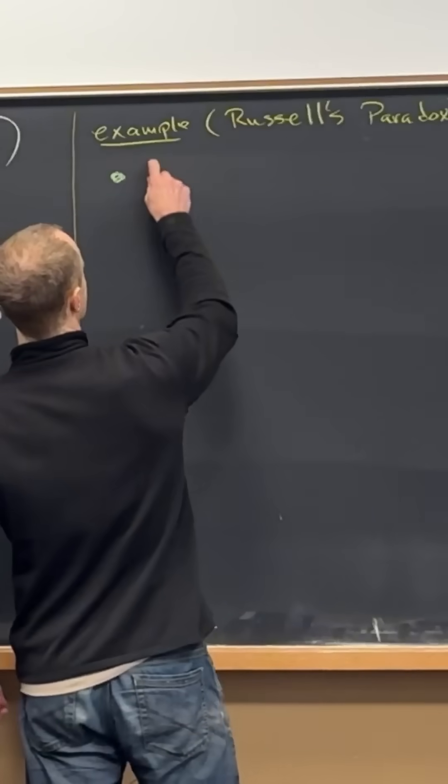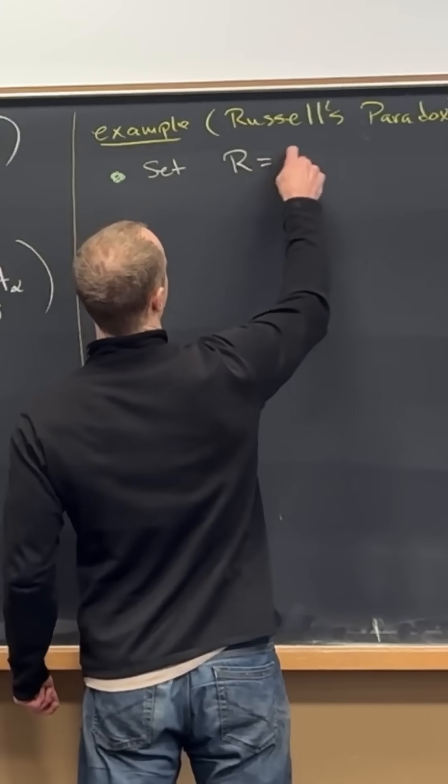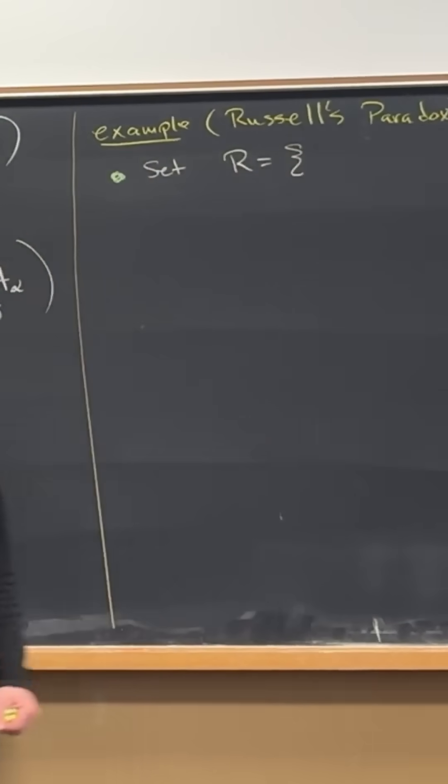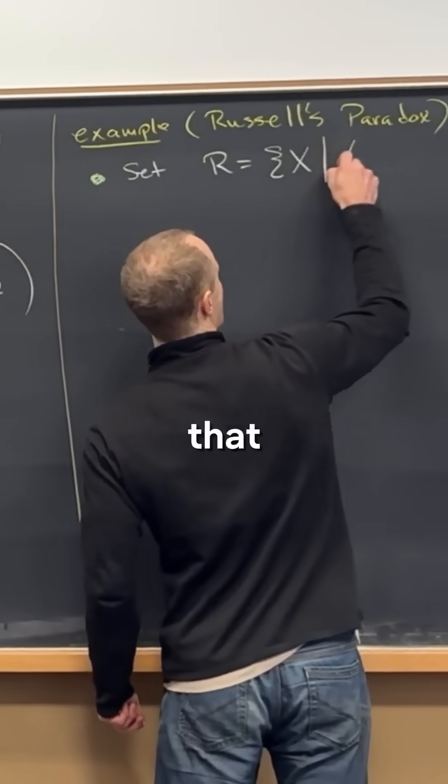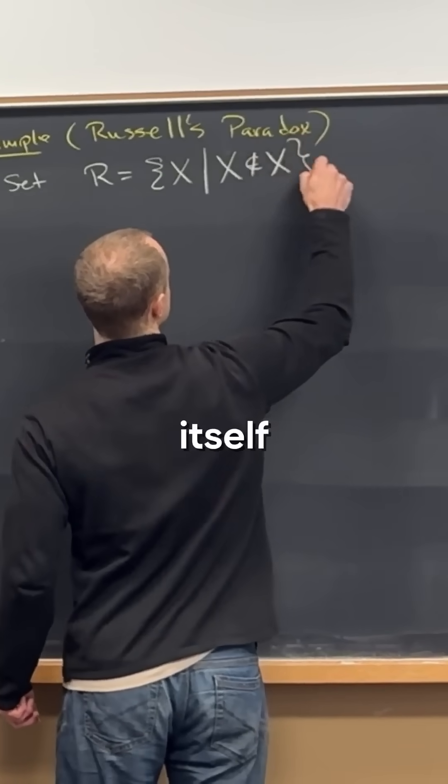So let's set capital R equal to the following set. It's gonna be the set of all X such that X is not an element of itself.